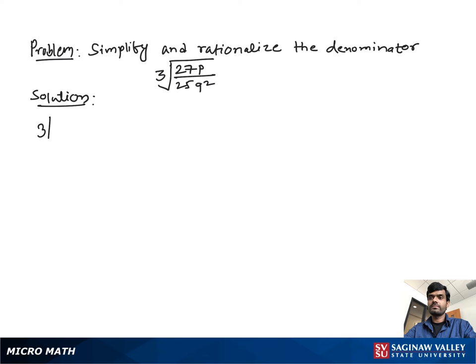Simplify and rationalize the denominator: cube root 27p divided by 25q square. First, we separate the cube root between numerator and denominator, so we can write cube root 27p over cube root 25, which is 5 times 5, and q square as q times q.